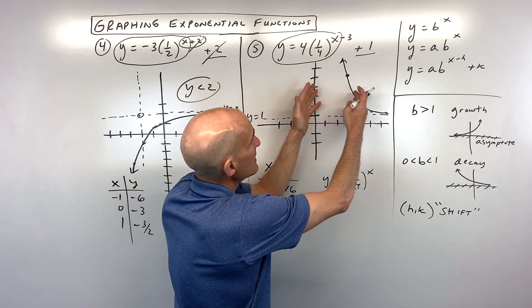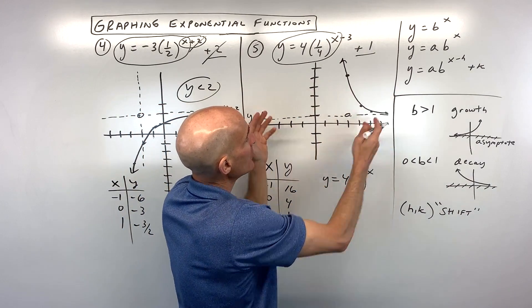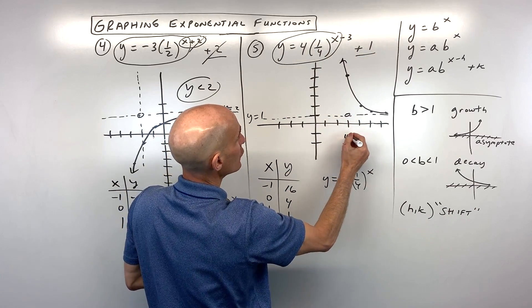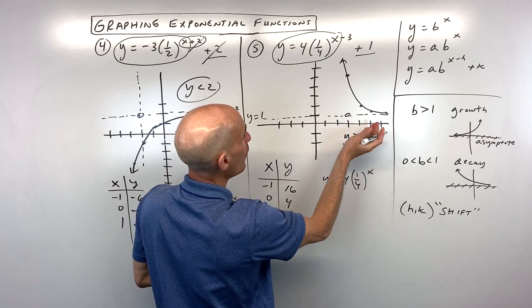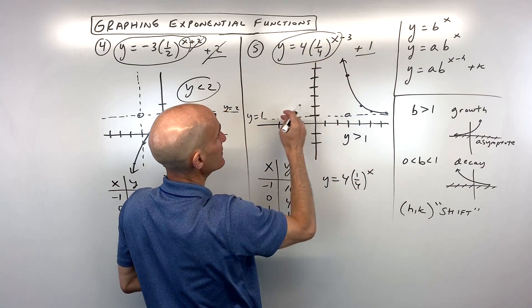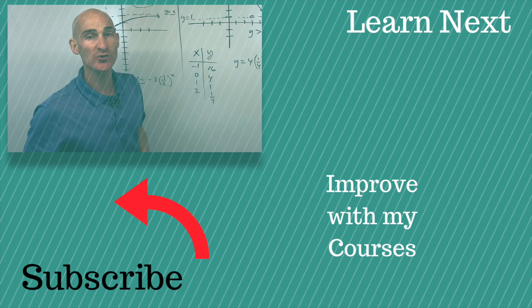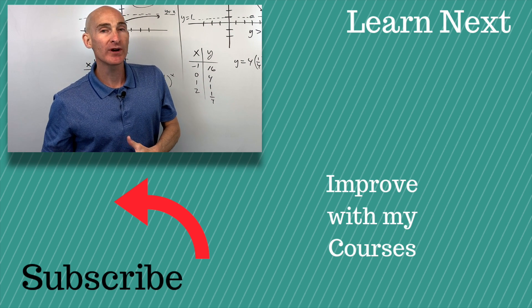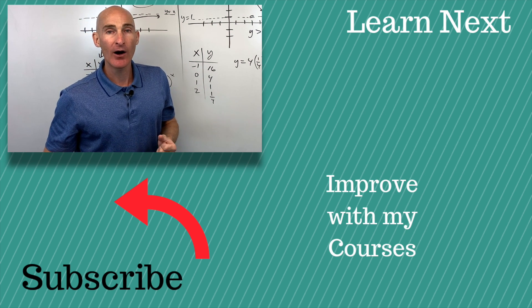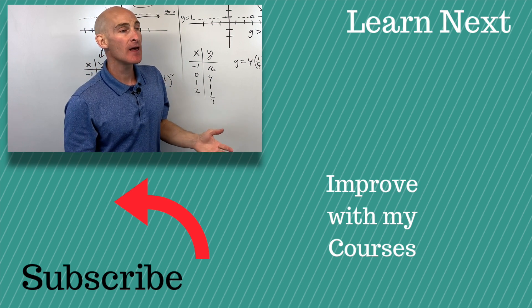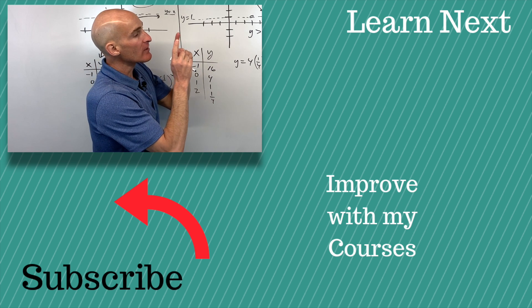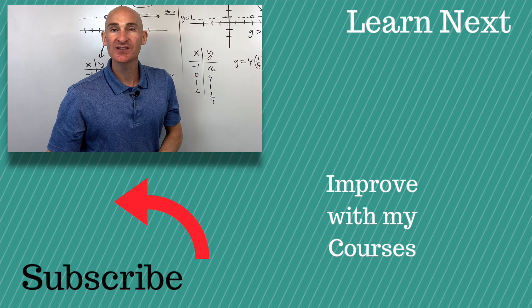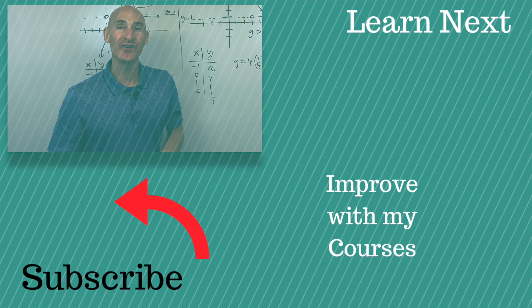The four is stretching the graph, and the three and one shift it right and up. Domain is all real numbers. Range is y is greater than one — it's above this horizontal asymptote y equals one. If you want to see more examples about graphing exponential functions, follow me over to that video for more examples.